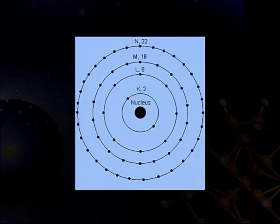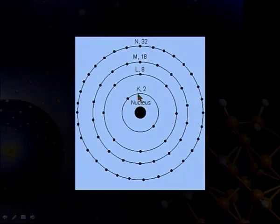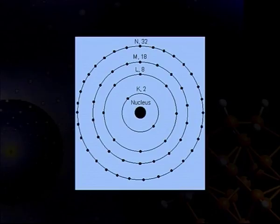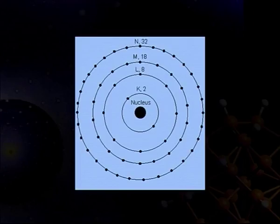These are the energy levels; sub energy levels are also there. The K shell can hold only two electrons, L shell 8, M shell 18, and N shell 32 likewise. For the K shell, since n is equal to 1, l can have only one value of 0, and m can also have only one value of 0.